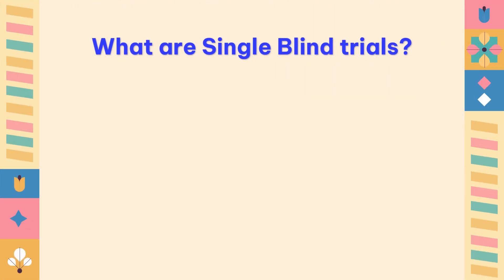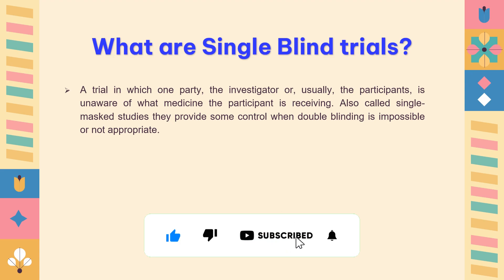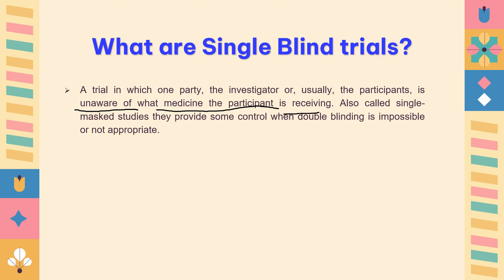Now let's understand single blinded trials. As the name suggests, only one party is blinded to the study treatment — usually the study investigator, or sometimes the study participant. In a single blinded trial, at least one party is unaware of what medication is being given. This is also called a single mask study, and it provides some control where double blinding is impossible or inappropriate.